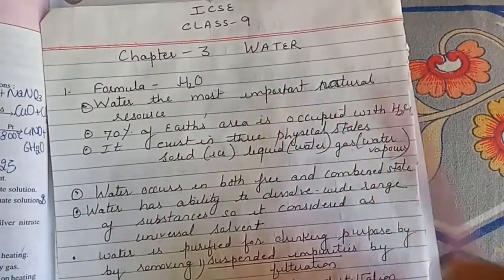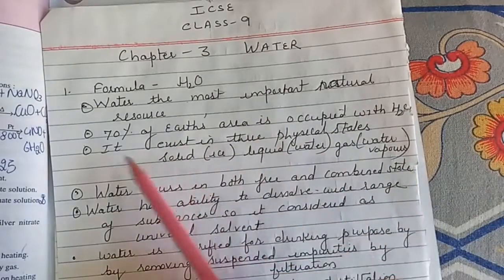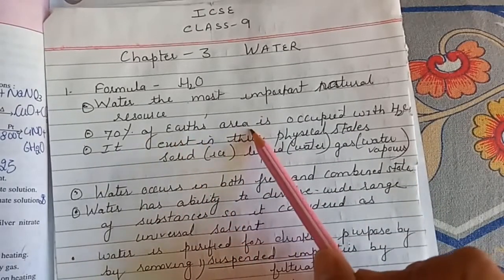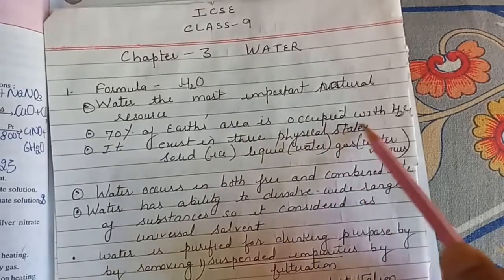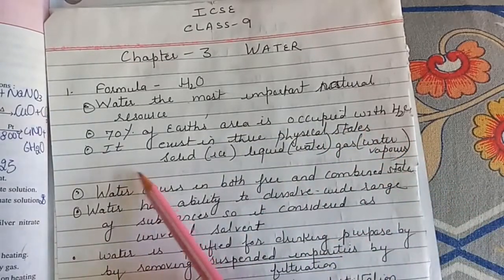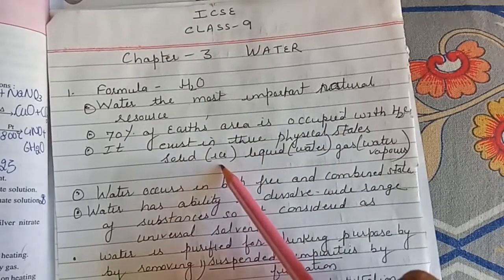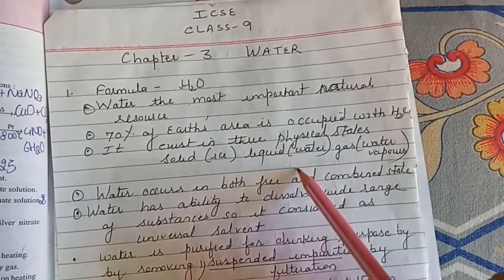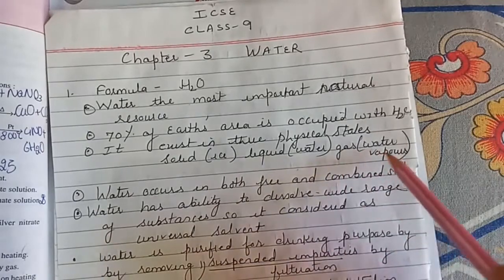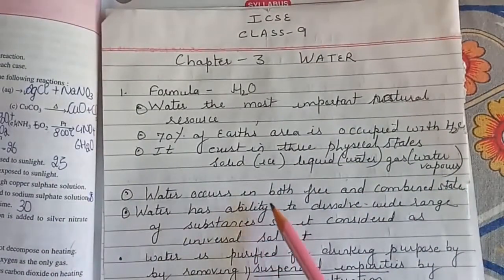Water is the most important natural resource. 70 percent of earth's area is occupied with water. It exists in three physical states: first solid, that is ice; liquid, that is water; and gas, that is water vapor.